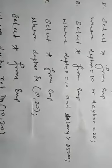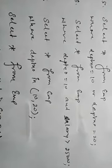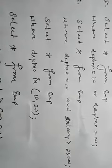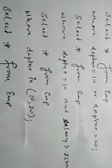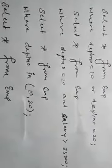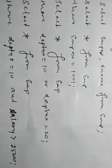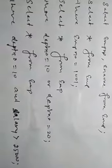When salary should be greater than 25,000, and we use AND between two conditions, both conditions must be satisfied in a single row. In the case of OR, any one of the conditions must match — either the first column condition or the second column condition.